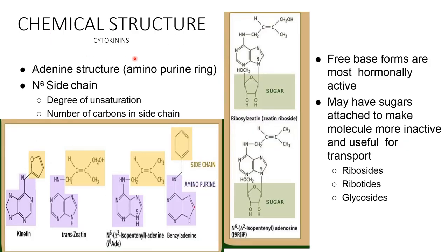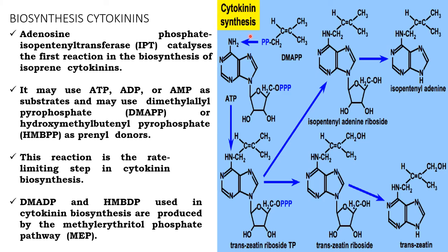Chemical structure of cytokinins: it consists of an aminopurine ring (adenosine structure) and an N6 side chain. The degree of unsaturation varies and the number of carbons in the side chain also varies. The free base form is mostly hormonally active; a sugar may be attached to make the molecule more inactive and useful for transport as riboside, ribotide, or glycoside.